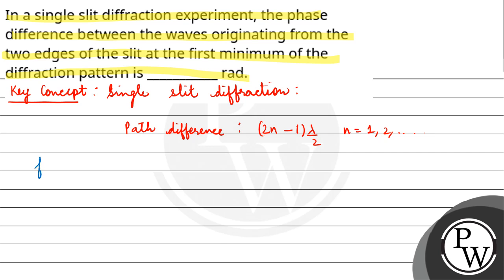First minimum. For the first minimum, if we talk about the path difference, so what will happen? Lambda by 2. Phase difference and path difference...